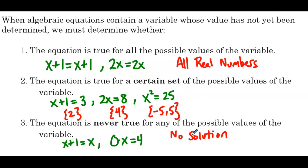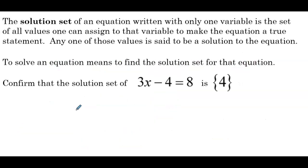So your answers should fall in one of these three categories: all real numbers, so any real number makes the equation true; a fixed number of x values; or no solution, no matter what x value you pick. The solution set of an equation written with only one variable is the set of all values one can assign to that variable to make the equation a true statement. Any one of those values is said to be a solution to the equation. To solve an equation means to find the solution set.